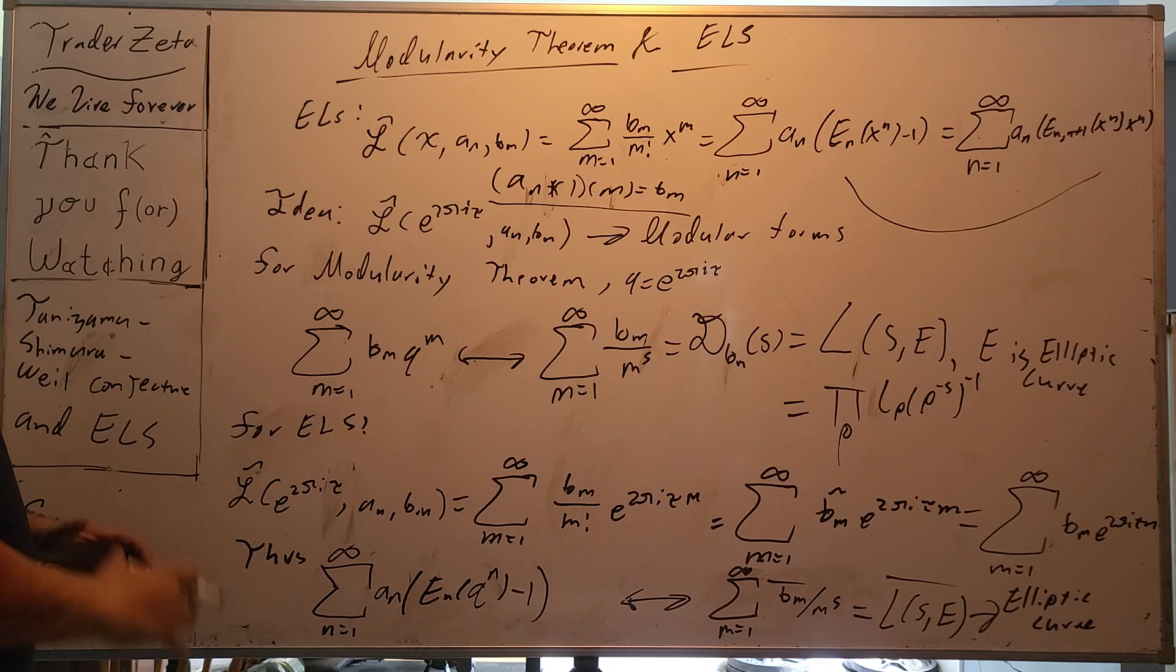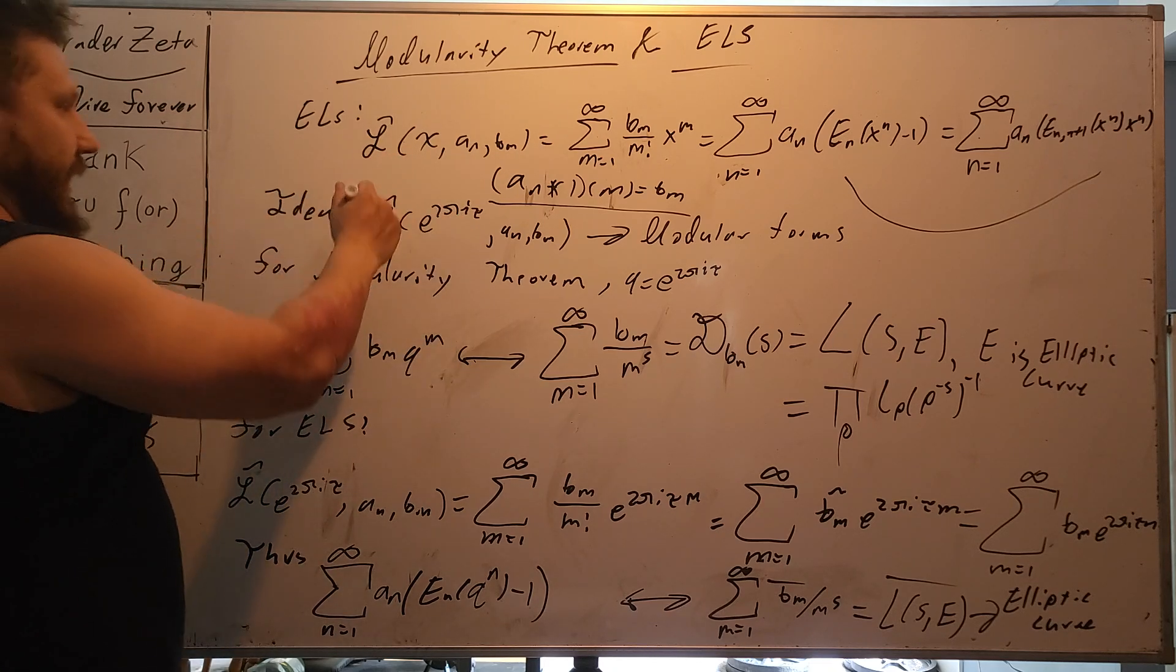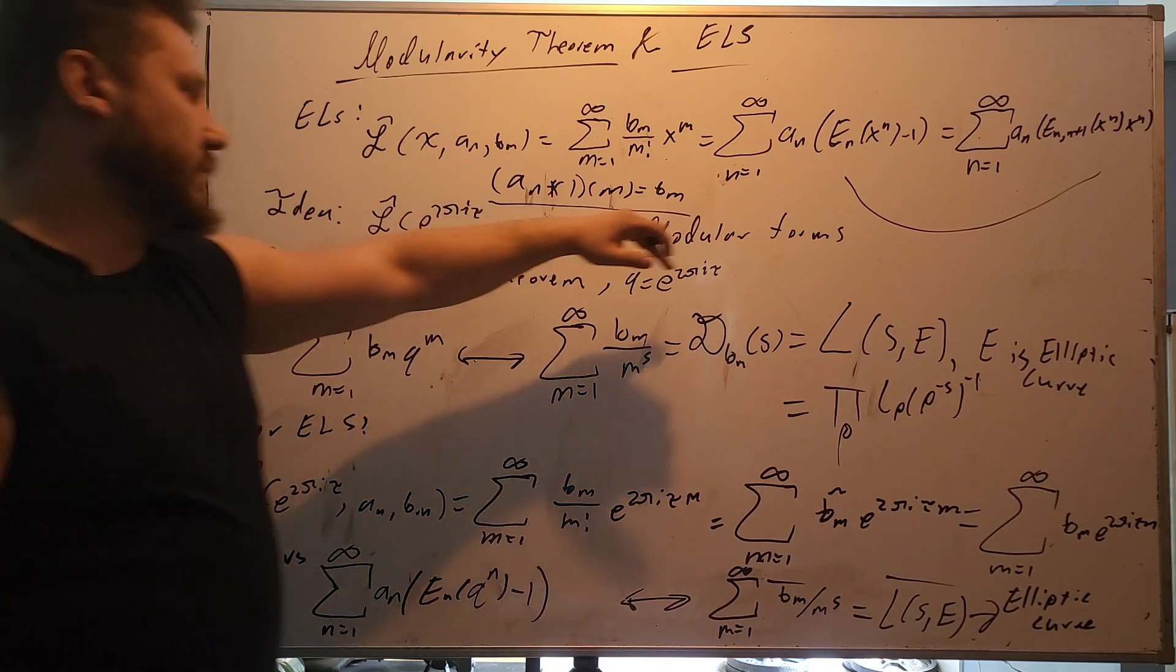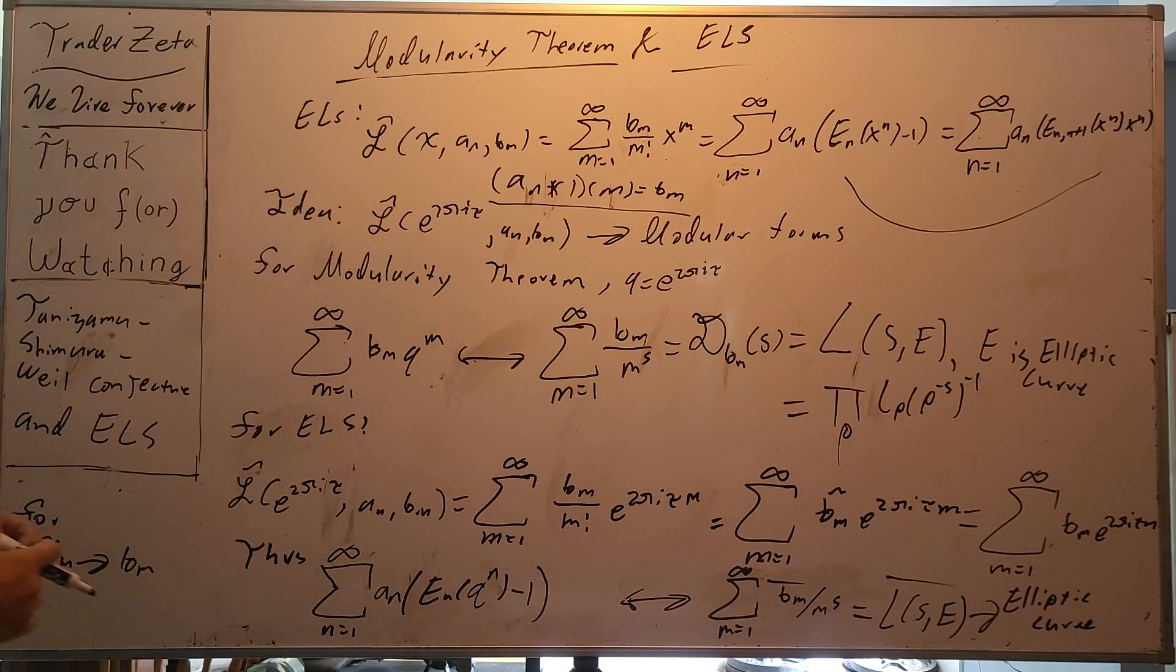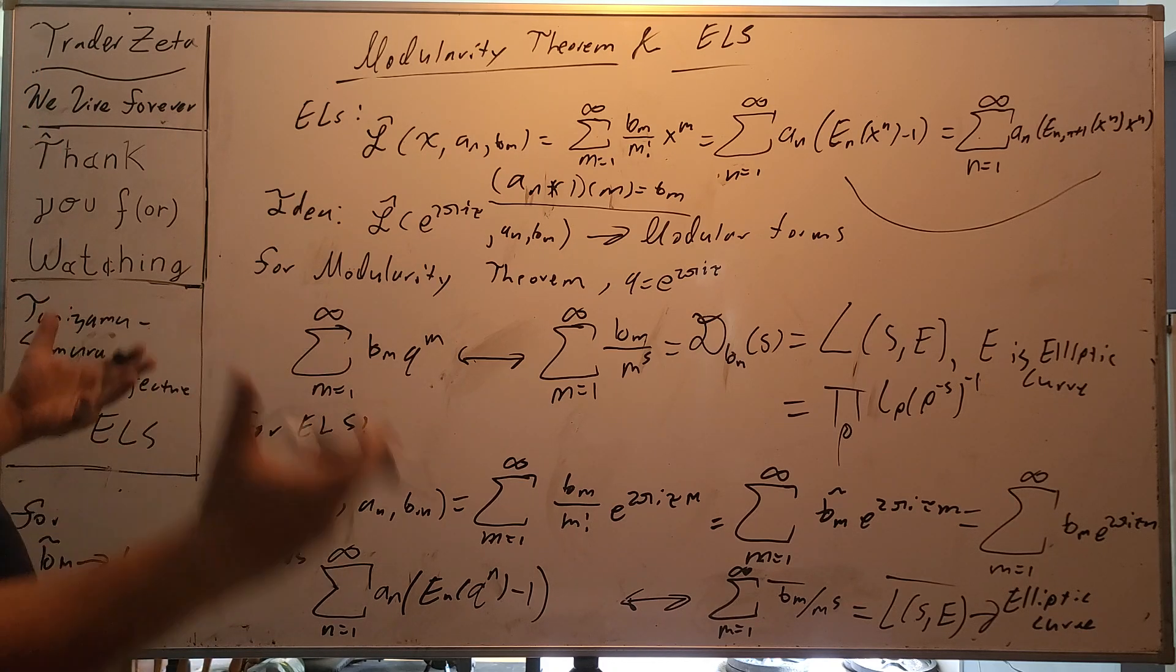Okay, our idea is that if we plug in e to the 2πiτ for x, it has something to do with modular forms. Now, the modularity theorem has been proven multiple times, and it pretty much, in sum, in a very quick overview, states that if you have sum m equals 1 to infinity, b_m q^m, where q is e to the 2πiτ,